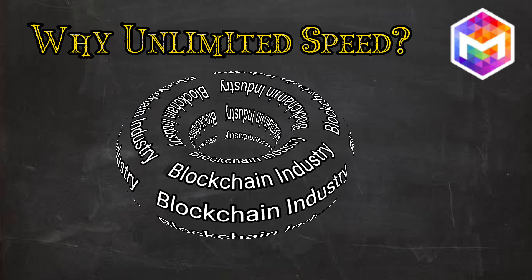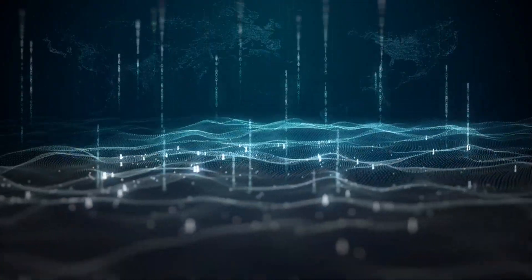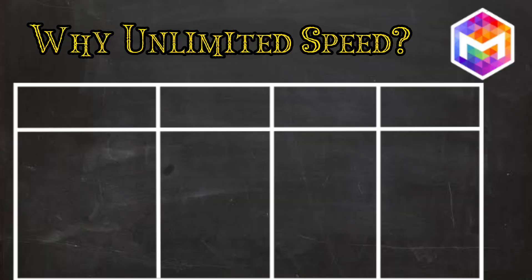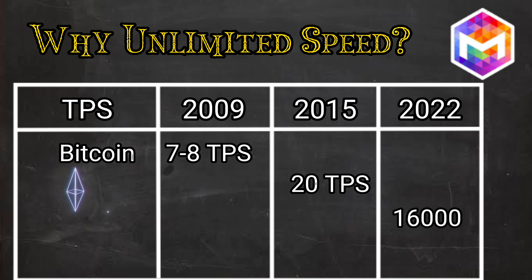The blockchain industry is growing in the same fashion. In 2009, when Bitcoin was launched, the majority of the world was unaware of this innovation called blockchain. Bitcoin was launched with a transmission speed of 7 to 8 TPS. In 2015, Vitalik Buterin introduced a revolution in the blockchain industry known as Ethereum, with a speed of 20 TPS. In 2022, version 2 of Ethereum was launched with a tremendous speed of 16,000 TPS. Although it is a great speed, there are some limitations and the platform is confronting merging issues.